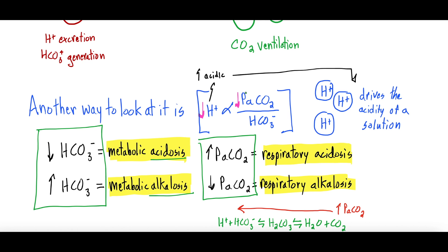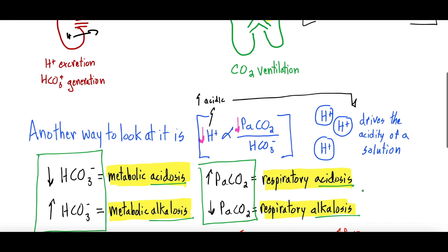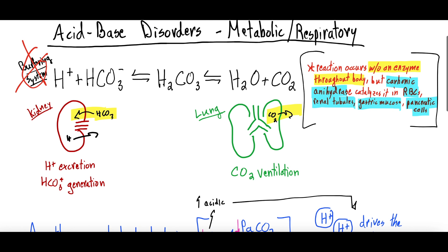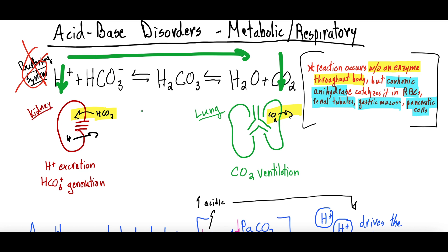If CO₂ goes lower, the numerator is lower, so hydrogen is lower — less acid, a more basic solution — and that's a respiratory alkalosis. The lungs regulate CO₂, and if the CO₂ is lower, the buffering equation drives toward lower hydrogen ions as the system creates more CO₂ to compensate.